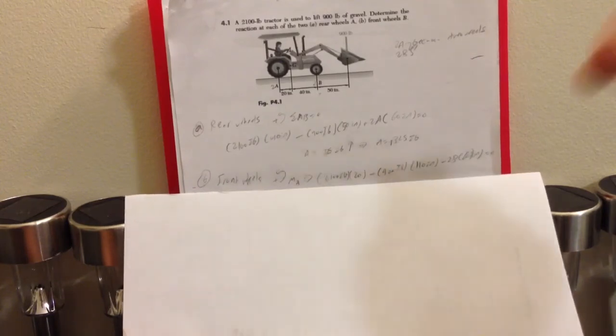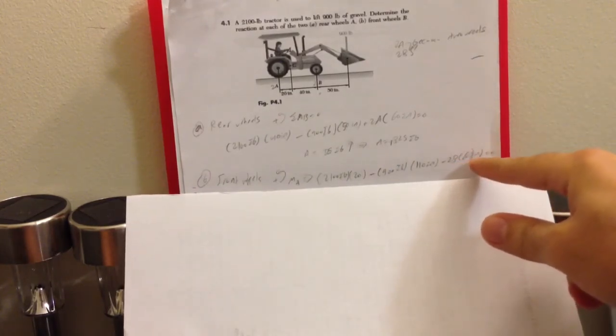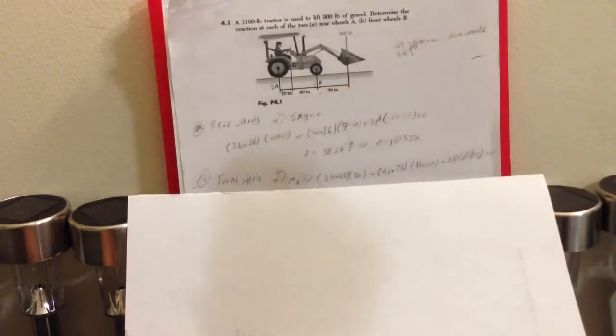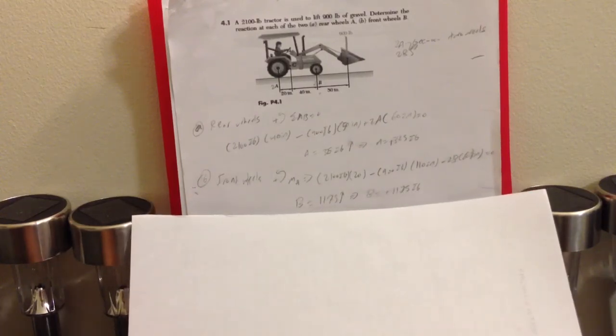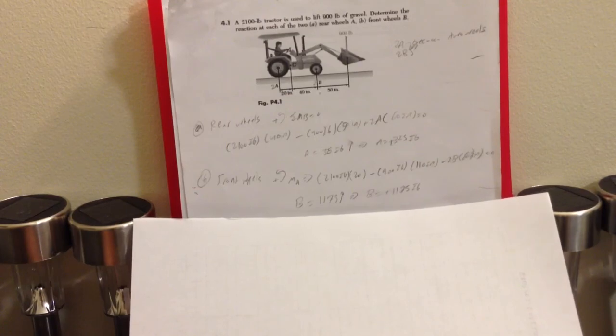Minus 2B times 60, which as we can see, 20 plus 40 is 60, which equals zero. And then we have to use the calculator to find the numbers. As we can see, B equals 1175.